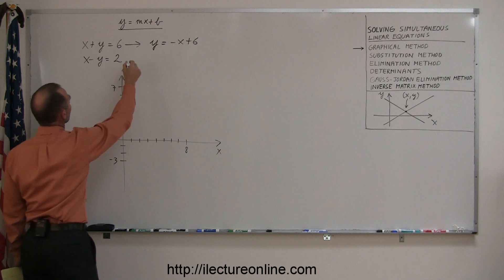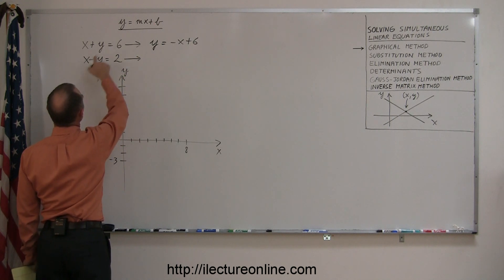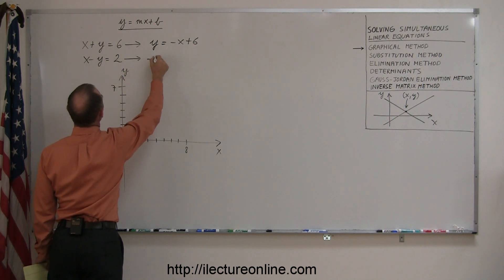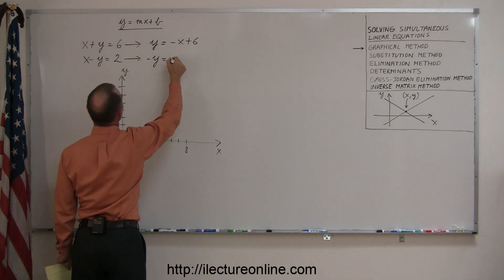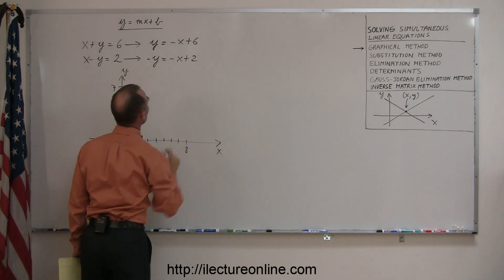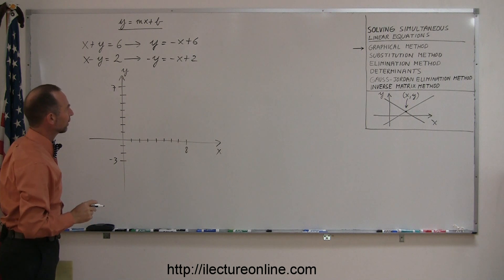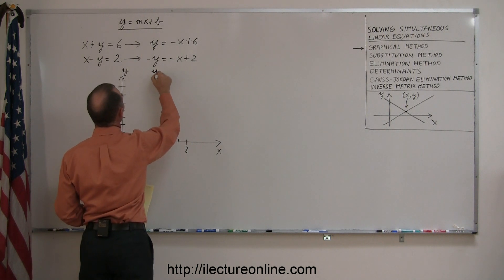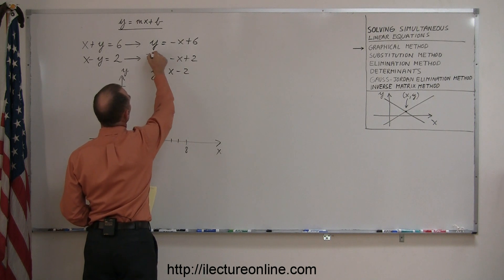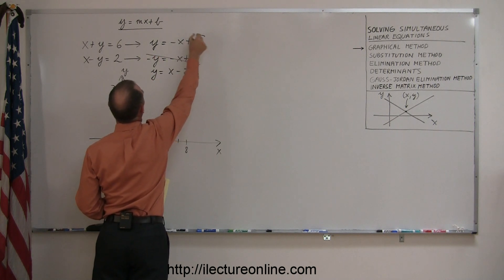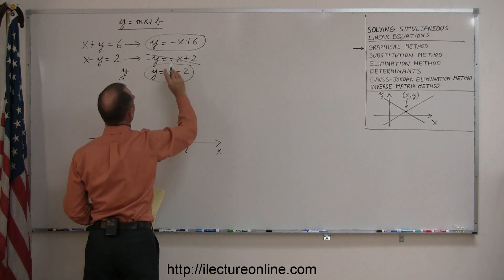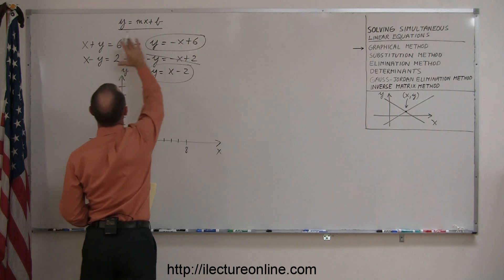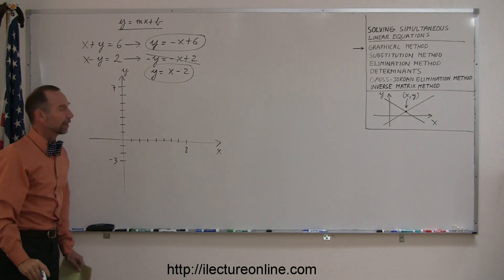My other equation, I need to move the x across, I end up with negative y equals negative x plus 2, and of course I don't want a negative y there, so I'm going to multiply both sides by negative 1, or simply change all the signs, so this becomes a positive y equals a positive x minus 2. So now I have this equation here and this equation here, which are the slope-intercept form of the original equations that I got.